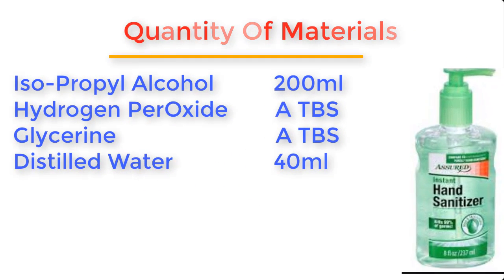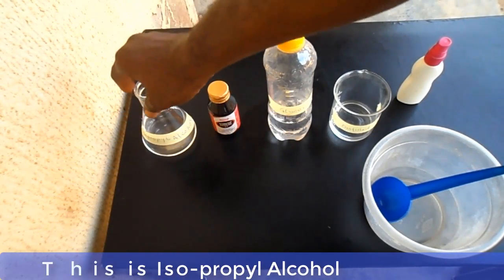Isopropyl alcohol, also known as IPA, 200 ml. Hydrogen peroxide, a tablespoon. Glycerin, a tablespoon. And distilled water, 40 ml. Now these are the materials.